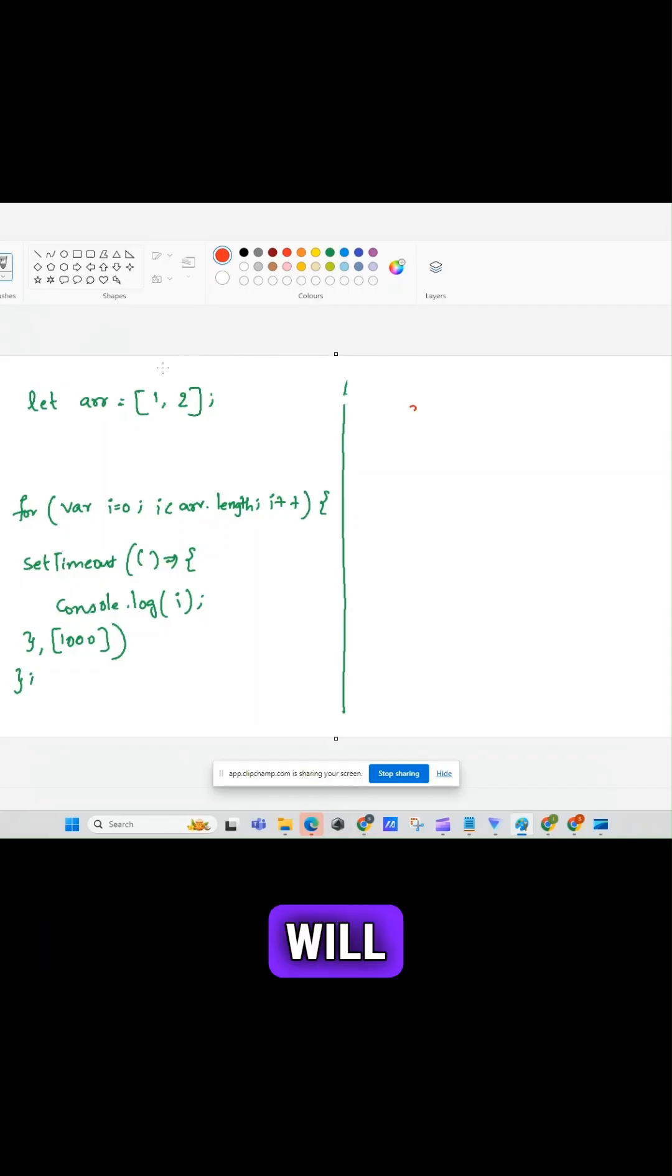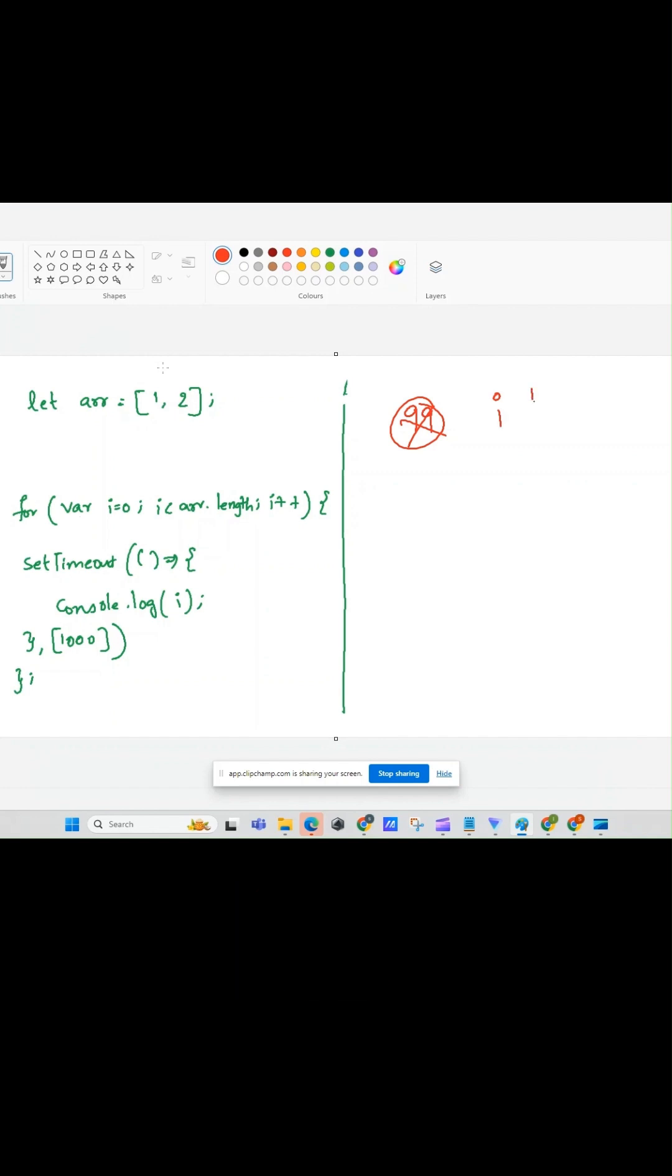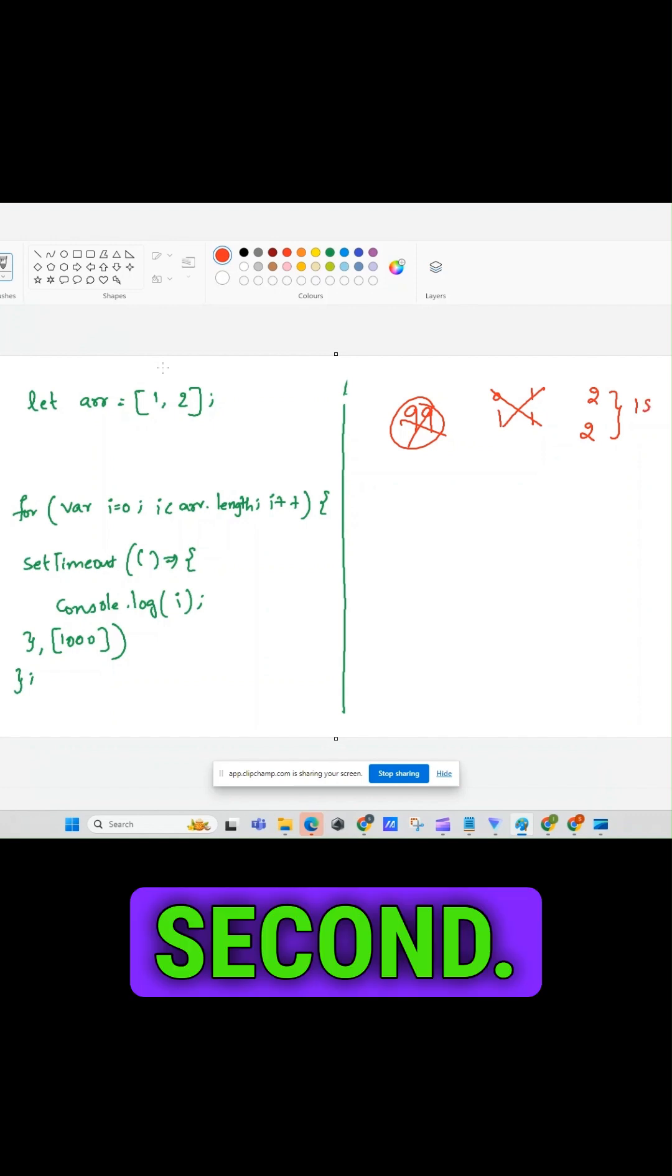99% of the developers will fail to answer this question. They will either say that the output has 0 and 1 or 1 and 1, but the output will be 2 and 2, which will be printed after 1 second.